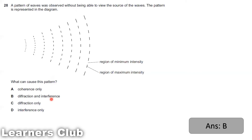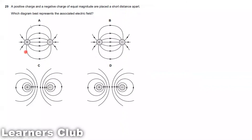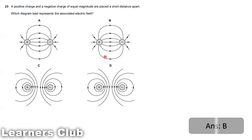Question 29: A positive charge and a negative charge of equal magnitude are placed a short distance apart. Which diagram best represents the associated electric field? Electric field lines run from positive to negative direction. Options C and D are incorrect. Option A is incorrect because the field runs from negative to positive. Option B correctly shows the field going from positive to negative charge, with the characteristic shape due to repulsion between field lines. The answer is option B.